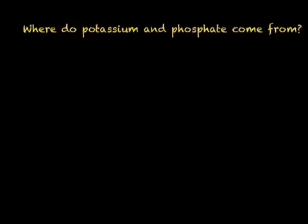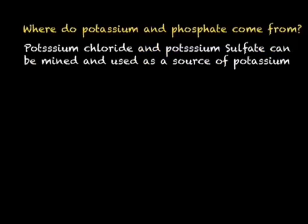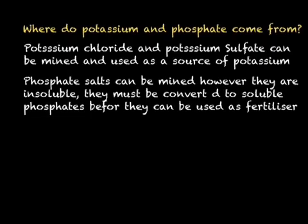So far we've only looked at the N part of NPK fertilisers. We also need to look at P (phosphorus/phosphates) and K (potassium). Potassium can be found in the form of potassium chloride and potassium sulfate, which can be mined and processed. Phosphate rock can also be mined; however, the phosphate salts in the rock are insoluble, so plants can't directly use them as nutrients — we need to convert them into soluble phosphates.